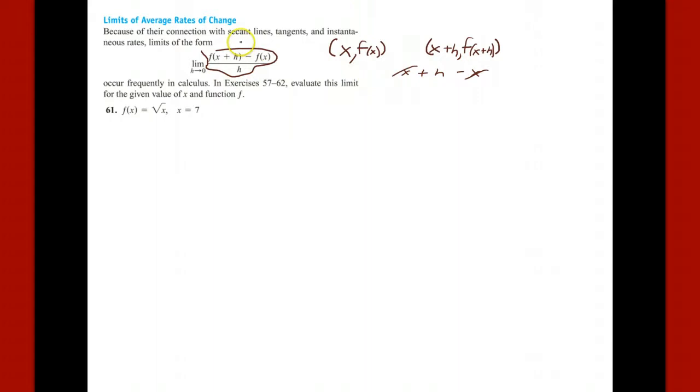So this is the slope of the secant line, but the limit as the gap between these points gets small—the gap between these points is h—the limit as the gap gets small will be the actual tangent line slope. That's what they want us to find.